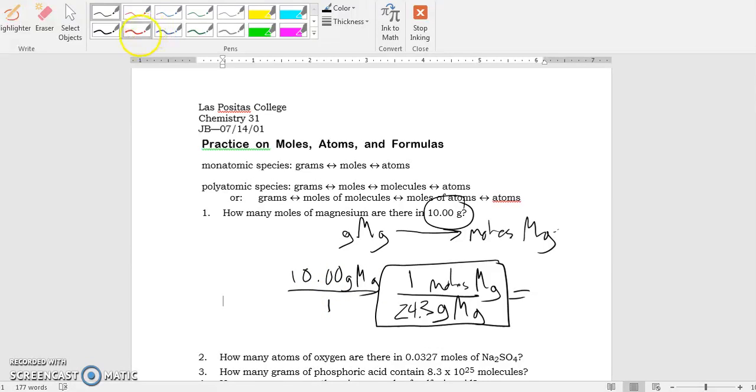First thing we've got to do is check: do the units cancel out? Grams of magnesium, grams of magnesium. What are we left with? Moles of magnesium. Does that answer the question? In this case, yes it does. So now we do the math. 10 times 1 divided by 24.3. And the calculator says that it is 0.415 moles of magnesium.